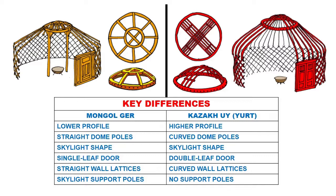Now, let's get back to the topic: differences and types. The Mongol ger has a lower profile; it has straight dome poles — very straight. The skylight looks like a wheel or a nautical steering wheel. The door is usually a single-leaf door in a massive frame. The wall lattice structures are straight. And one of the main differences is that the skylight wheel is supported by two interior poles, because it would not be able to support itself on its own.